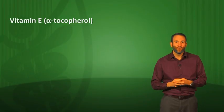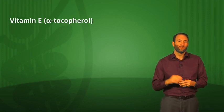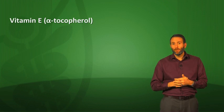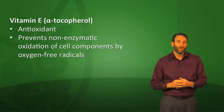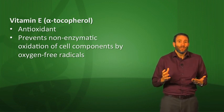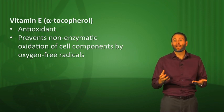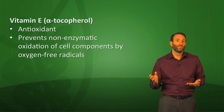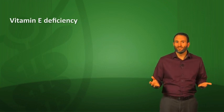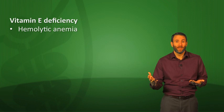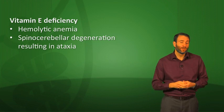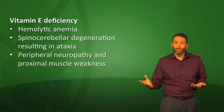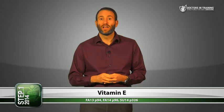Moving on: vitamin E, also known as alpha-tocopherol. Its primary function is as an antioxidant — it prevents non-enzymatic oxidation of cell components by oxygen free radicals. It's especially important for red blood cells, helping prevent free radicals from damaging RBCs and other cells. Vitamin E deficiency is associated with hemolytic anemia, spinal cerebellar degeneration resulting in ataxia, peripheral neuropathy, and proximal muscle weakness. And that covers our fat-soluble vitamins: D, K, A, E — remember ADEK.